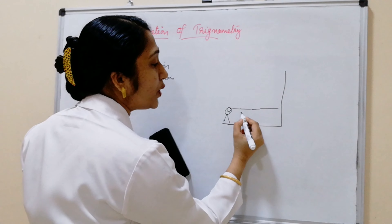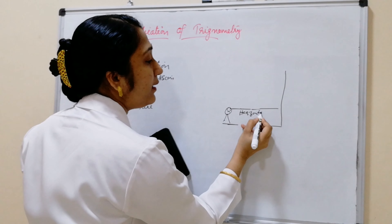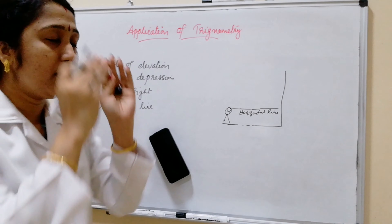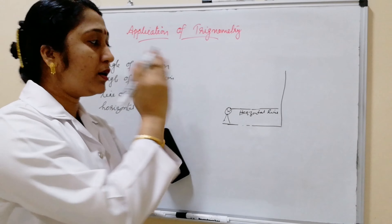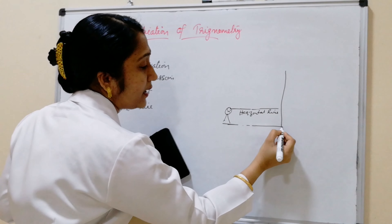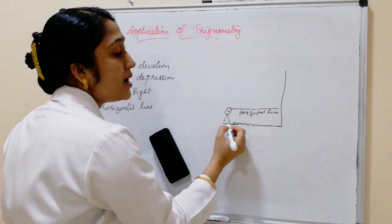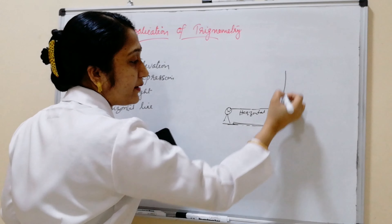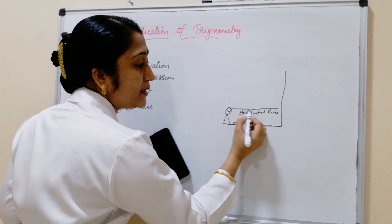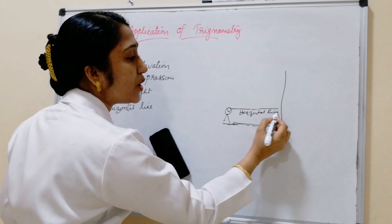This is the horizontal line — that means our vision straight ahead. A boy is standing here, this is the tree, and this is the boy's eye vision. The line straight from the eye is called the horizontal line.